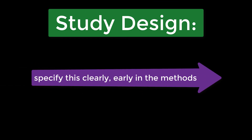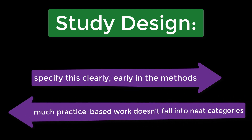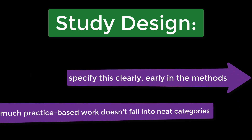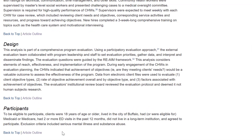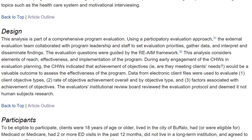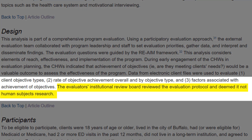Early in the methods, you should specify the design of the study as clearly as possible, with the appreciation that much practice-based work doesn't fall into neat categories such as randomized control trial, cohort, case control studies, time series, or cross-sectional designs. For complex or non-traditional designs, you might consider supplemental figures or tables that detail who and when participants were recruited, measured, and intervened upon. This is a good place to present information about ethical oversight of the study, or in other words, IRB review. Here, the authors mention that the Institutional Review Board has reviewed the evaluation protocol.